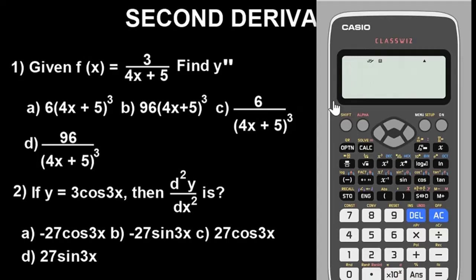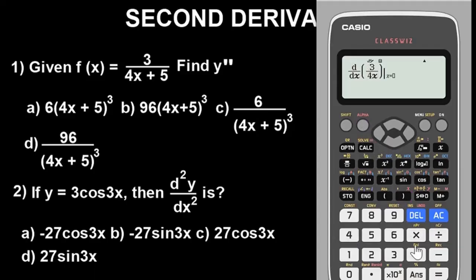Now let's go ahead and differentiate the question to get the first derivative. Press Shift, then the button with the integral sign — that's the differentiation function. Enter the expression: 3 over (4x — press Alpha then X — plus 5). Put in the stored value of 2 where required and press equals. We now have this value for the first derivative.